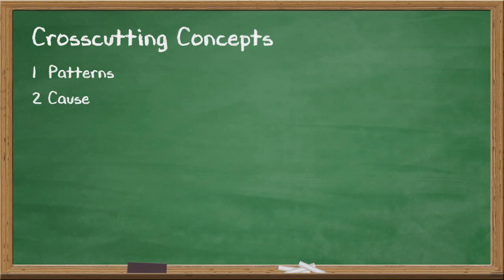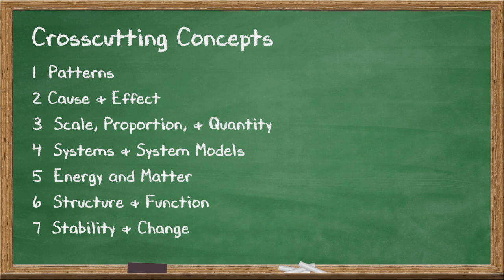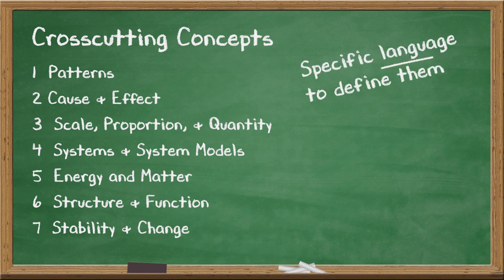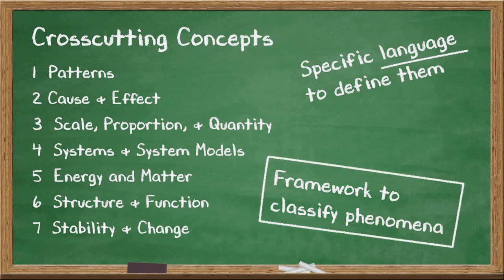At the end of these two activities, participants should know that there are seven CCCs, that the NGSS uses specific language to define them, and that they can be used as a framework to classify phenomena.